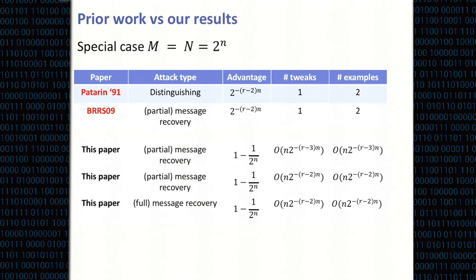Another question asked why differential cryptanalysis was not mentioned, since the attack looks at input differences and output differences to recover something in the last round — classic differential cryptanalysis in arithmetic. The speaker agreed but noted the use of multiple tweaks and the idea of accumulating bias as a distinguishing element.